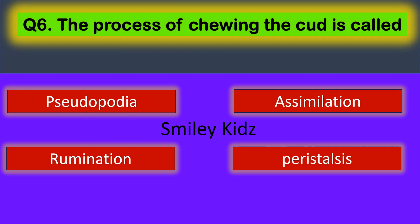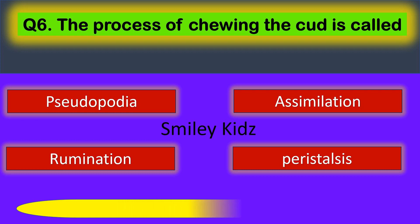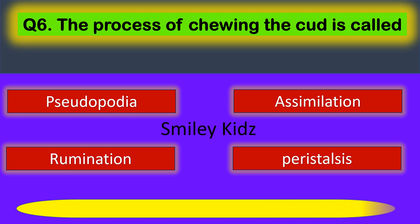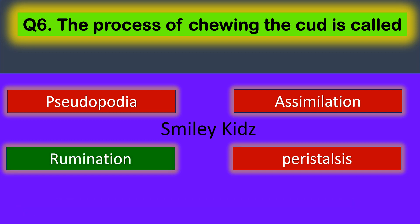Question number six: the process of chewing the cud is called — your options are: pseudopodia, assimilation, rumination, and peristalsis. The correct answer is rumination. The process of chewing the cud is called rumination.